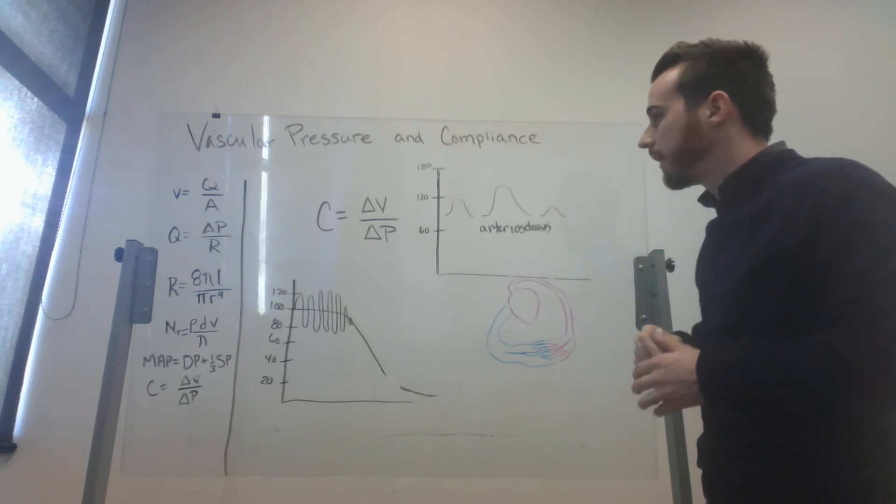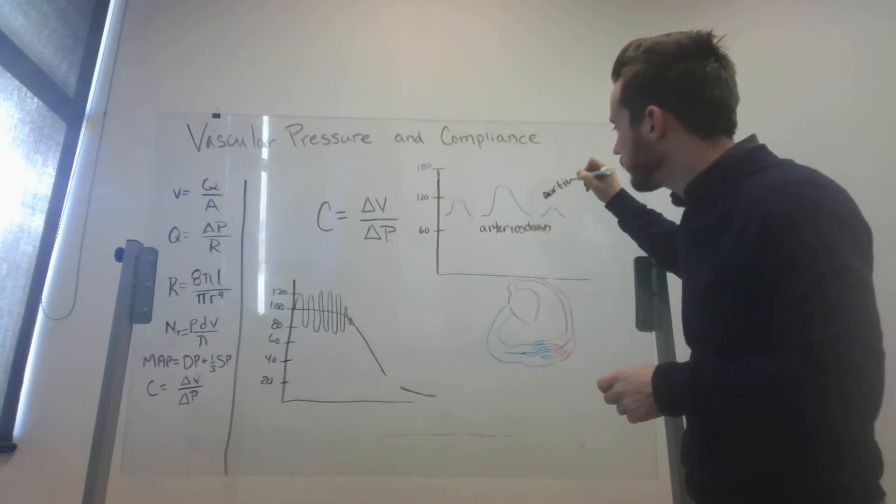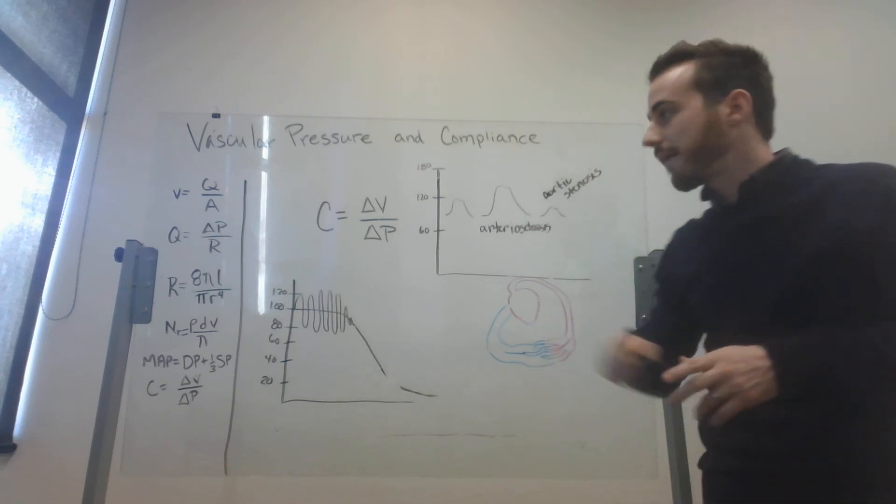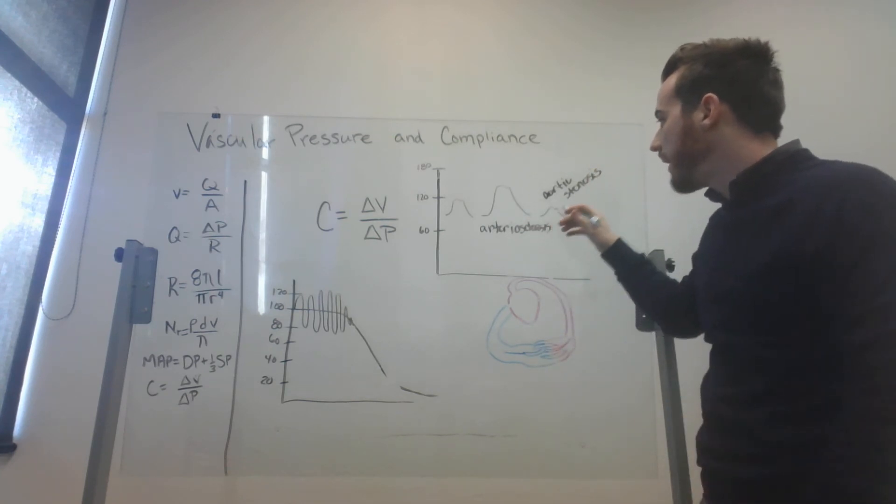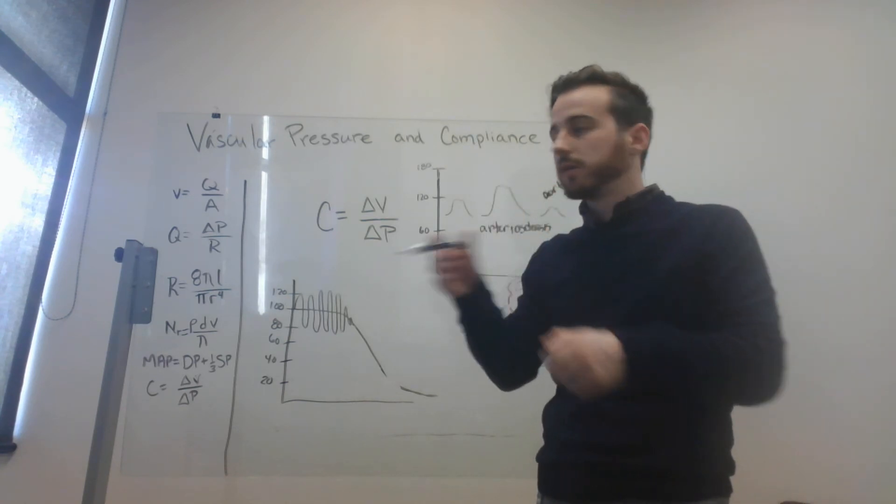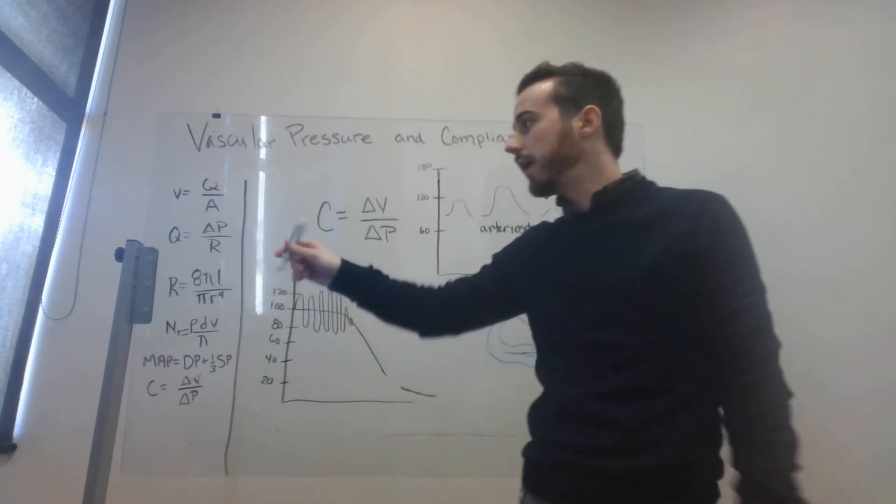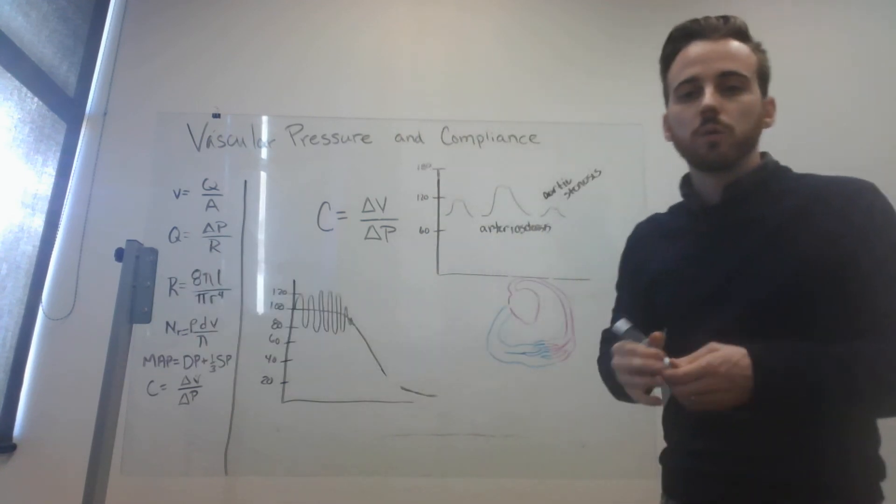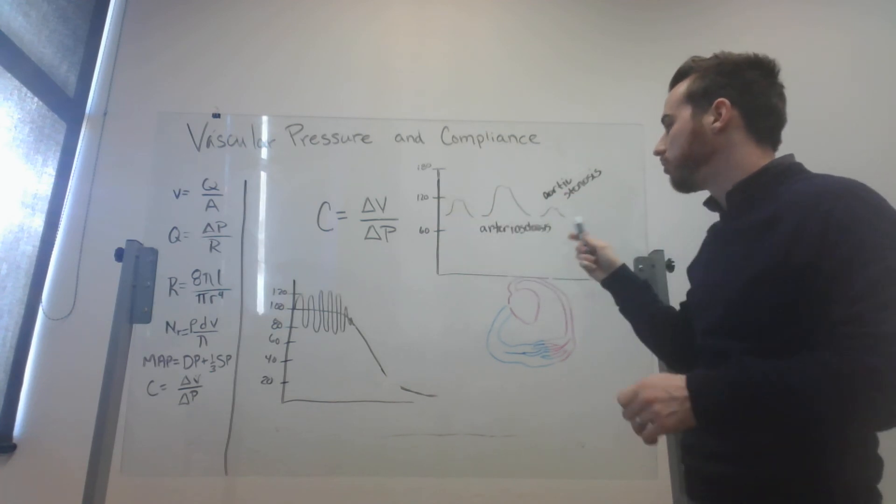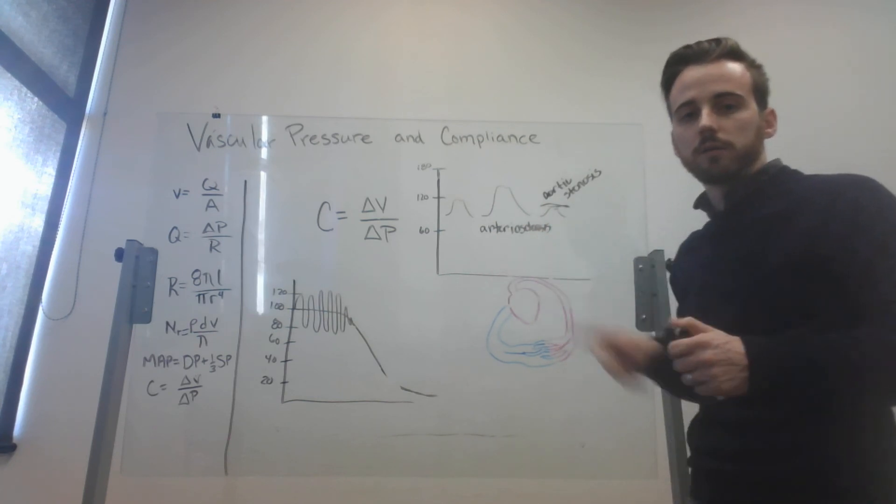Now, this one, on the other hand, is actually aortic stenosis. This does not have anything to do with the compliance of the blood vessels. The blood vessels haven't changed in compliance. But by increasing that stenotic valve, that hardened valve, you're not able to eject as much blood. So your flow rate is going to be less, which causes a smaller pressure differential. So it's going to have a lower systolic pressure.